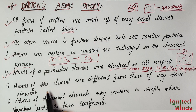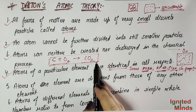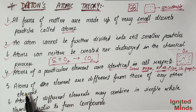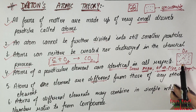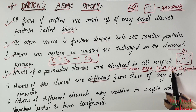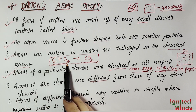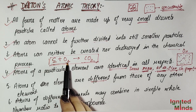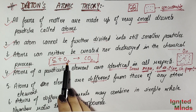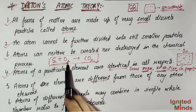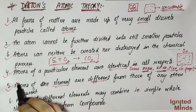The fifth postulate: atoms of one element are different from those of any other element. For example, if we compare carbon and oxygen, these atoms are different from each other. All oxygen atoms among themselves were the same — same mass, size, atomic number, and properties. But if we compare carbon atoms with oxygen atoms, their mass is different, atomic number is different, and size is different. As we discussed in the table, different elements have different properties.